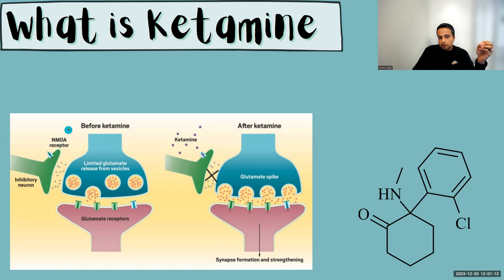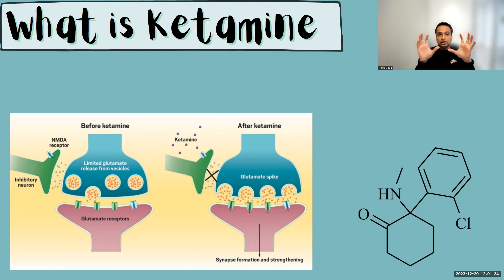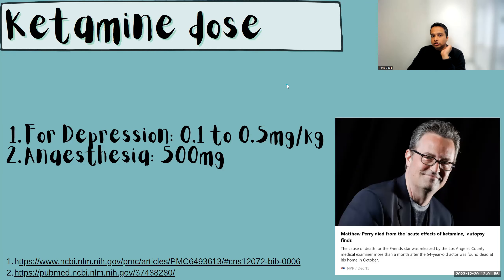Ketamine historically has been used for anesthesia to knock you out, but nowadays it is prescribed as an antidepressant. There are two different effects — antidepressant and anesthetic — and this depends entirely on the dose. For depression, you're given around 0.1 to 0.5 mg per kg. For example, for a 100 kg person, you need either 10 mg or a maximum of 50 mg to work as an antidepressant. For anesthesia to knock you out, you need 500 mg.